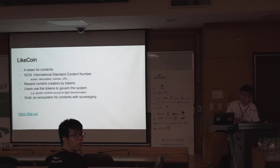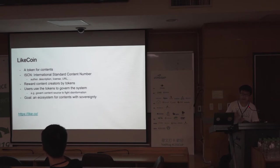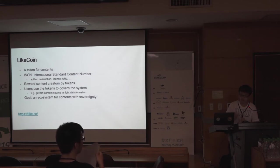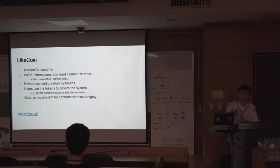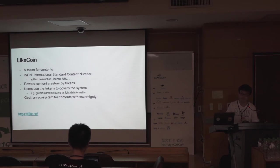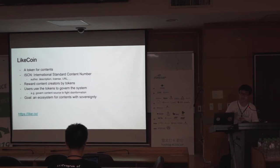First, Litecoin. What is Litecoin? Litecoin itself is a token. It's already online on Ethereum — it's currently an ERC20 token — but we are planning to move to our own blockchain when LiteChain is finished. It aims to be the token for contents. It will have a few components. First is what we call ISCN, which is similar to ISBN, the International Standard Book Numbers. We want to have an international standard content number to give contents on the internet a number to reference. By this number, you can find the content's metadata like the author, description, license, and URL.